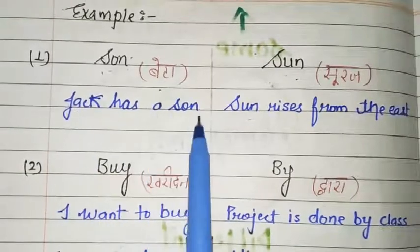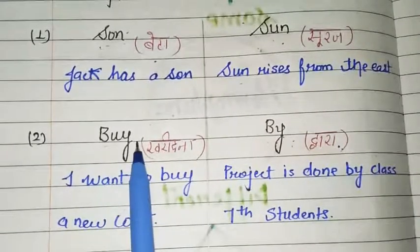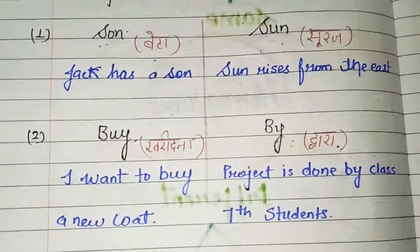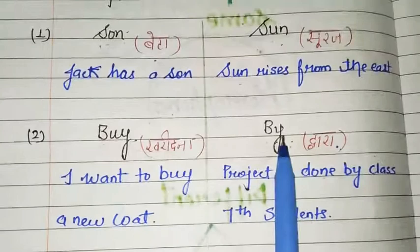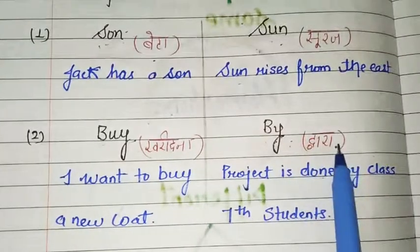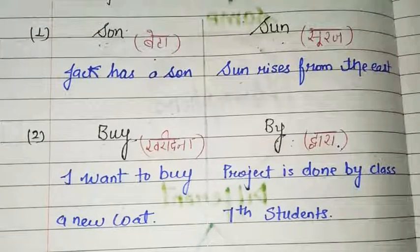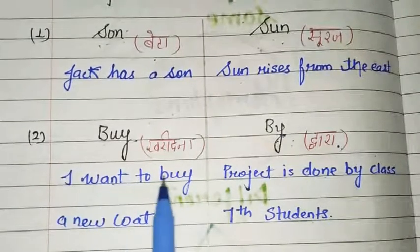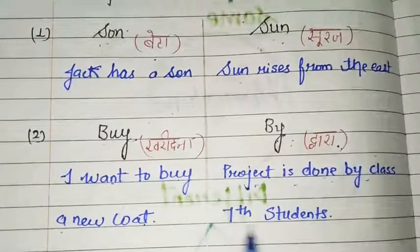Jack has a son. Sun rises from the east. Next example: B-U-Y and B-Y. Dear students, aap ne dekha B-U-Y aur B-Y ka sound pronunciation same hai. But dono ki spellings — B-U-Y aur B-Y — different hai, aur meaning bhi different. B-U-Y matlab kharidna, and B-Y matlab dwaara. Aise words homophones hote hai. I want to buy a new coat. The project is done by class seven students.